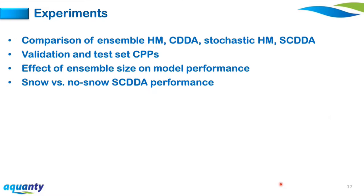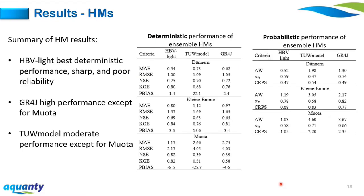For the standalone hydrological model results: HBV-light shows superior deterministic performance with lower MAE and RMSE and higher NSE and KGE compared to other models. Despite its strong deterministic performance, HBV-light shows poor reliability — the alpha index of 1.0 represents perfect uniformity, but we see values of 0.59, 0.78, and 0.58. Despite poor reliability, its CRPS is still better than the other models. Comparing TUW and GR4J against HBV-light, NSE levels are relatively similar for the Dünnern and Kleine Emme catchments; however, Bayesian-optimized models underperform for the Muota catchment. The TUW model also showed a consistent model bias problem.